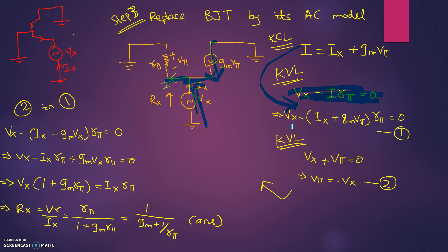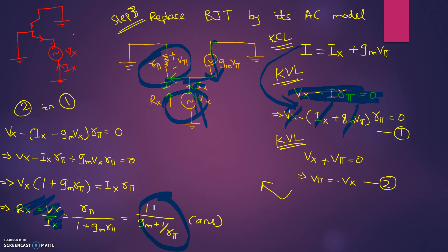We need to find Vx divided by Ix. The term Vpi needs to be expressed in terms of Vx or Ix. Observing that Vpi and Vx form another KVL loop: Vx plus Vpi equals zero, so Vpi equals negative Vx. Substituting into the previous equation: Vx minus Ix minus Gm·Vx, all times Rpi, equals zero. Solving, Rx equals Vx divided by Ix, which equals 1 divided by (Gm plus 1/Rpi).